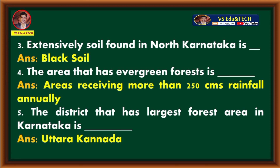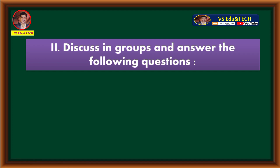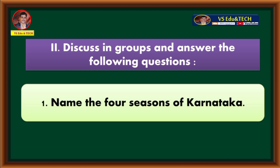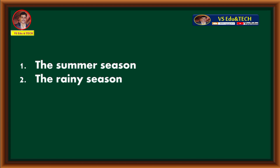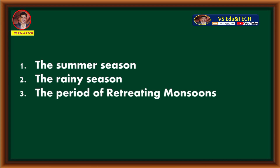Second main — discuss in groups and answer the following questions. First question: name the four seasons of Karnataka. The four seasons of Karnataka are: the summer season, the rainy season, the period of retreating monsoons, and the winter season.